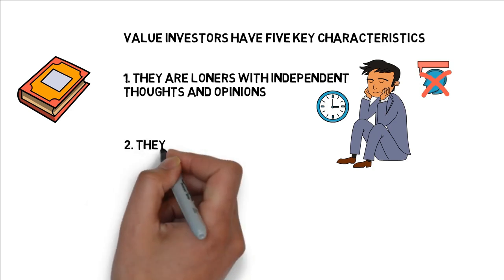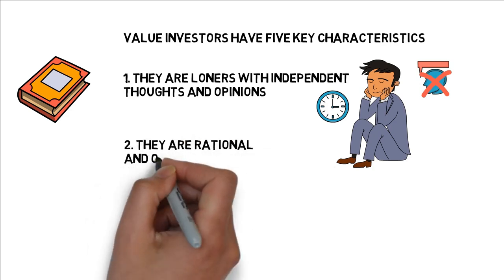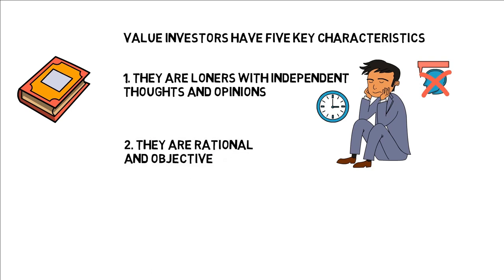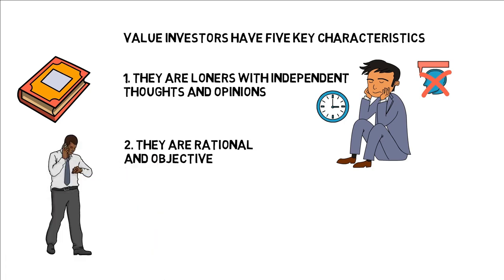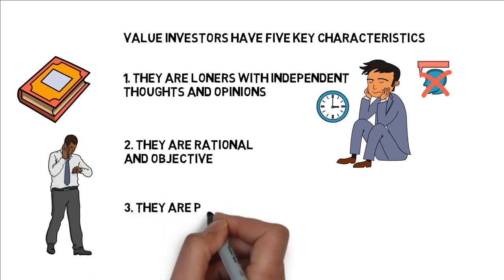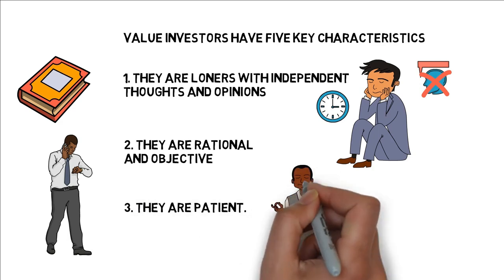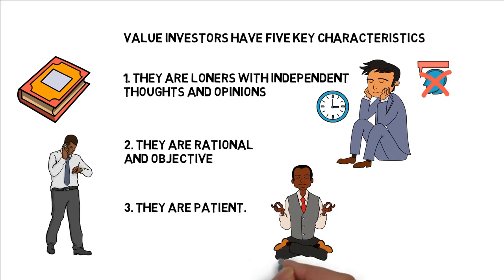They are rational and objective. People who are less affected by emotions are usually better value investors. There are countless books and articles warning beginner investors about their emotions, which may lead them to buy and sell at the wrong time. They are patient. Berkshire is the perfect example of this. They're willing to sit on a pile of cash for years or decades if they believe that there's no attractive deals on the market within their circle of competence. They are decisive.